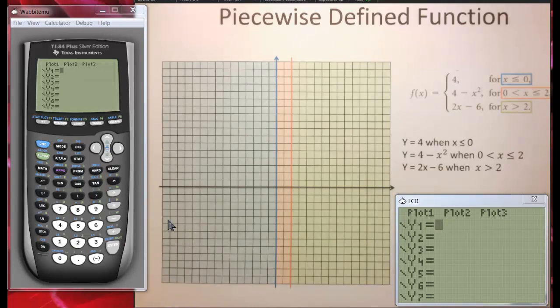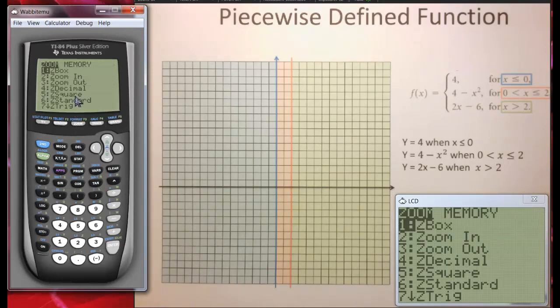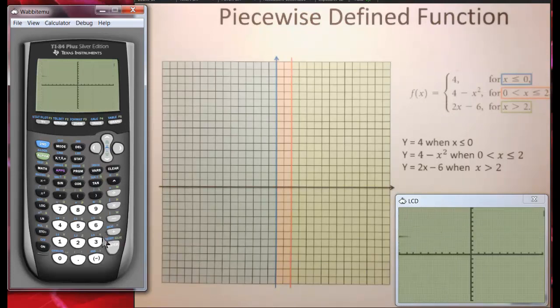No, I'm not, because I have to do it here, not on my keyboard. There we go. And I'm going to graph it. Zoom 6 will always put your calculator back where you want it. There we go. See how it's a straight line through y equals 4.